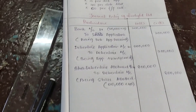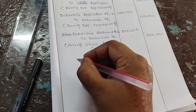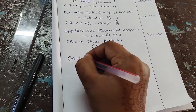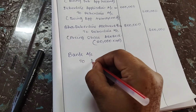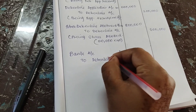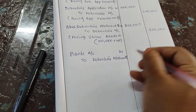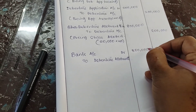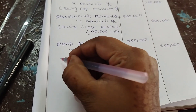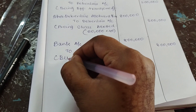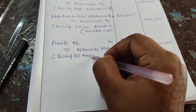As we have allotted, we are welcoming people to come and pay. So the second entry here will be: Bank Account Dr. to Debenture Allotment Account — being allotment money received.